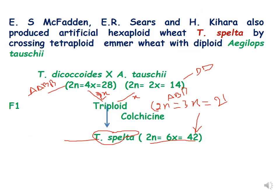McFadden, Sears, and Kihara also produced artificial hexaploid wheat — T. spelta, which is Triticum spelta — by crossing tetraploid emmer wheat with diploid Aegilops strangulata. Here, Triticum dicoccoides, a tetraploid species, was cross-fertilized with Aegilops strangulata, a diploid species. A triploid was formed, and then Triticum spelta, a hexaploid species, was obtained.